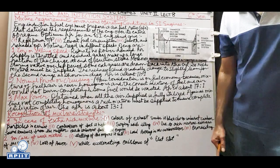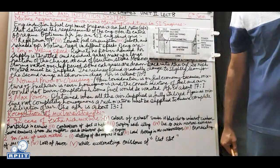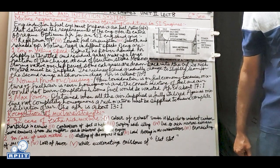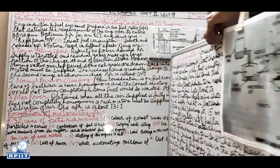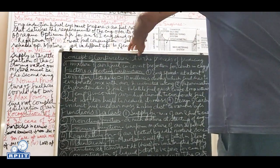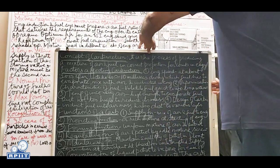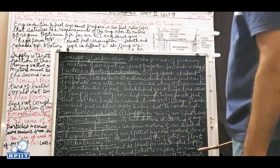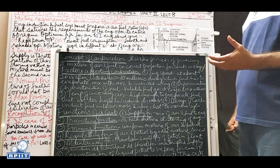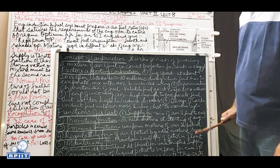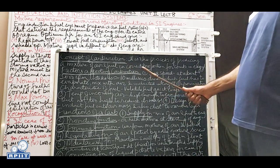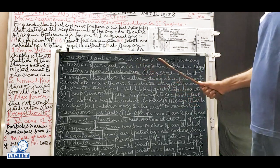Next, as per the syllabus, we will look at the concept of carburetion and then the simple carburetor. Carburetion is the process of producing a mixture of air and fuel in the correct proportion - the ideal being stoichiometric at 14.6 or 14.7:1 - for combustion in the engine cylinder. The carburetor should give the right amount for the various engine speeds.